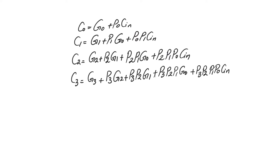If we examine the expressions for carry-outs at different bit positions, we start to see patterns. The last term in every carry expression contains carry-in as well as only propagates — it doesn't contain any generates. All the terms before it contain generate bits as well as propagate bits, but not carry-in. Looking at the first bit position, c0 is equal to g0 plus p0·cn, meaning it is true if the current bit position g0 is generating or if there was a carry-in equal to one and the current position is propagating.